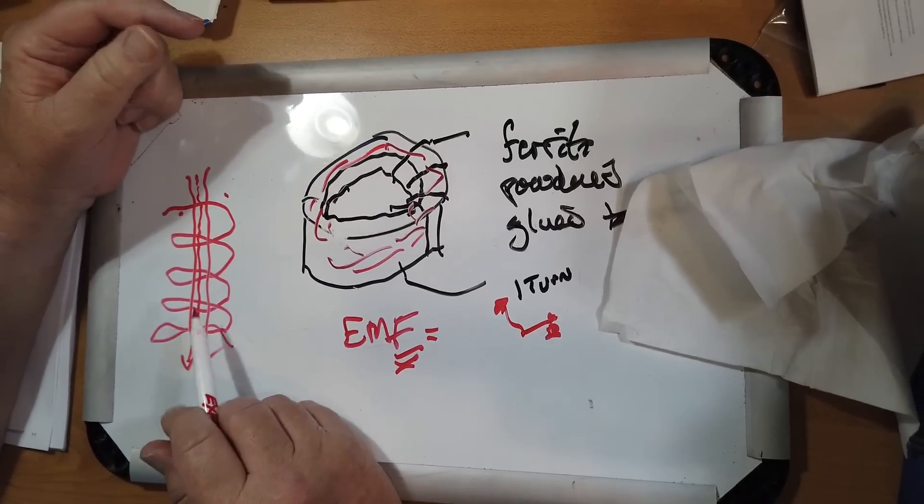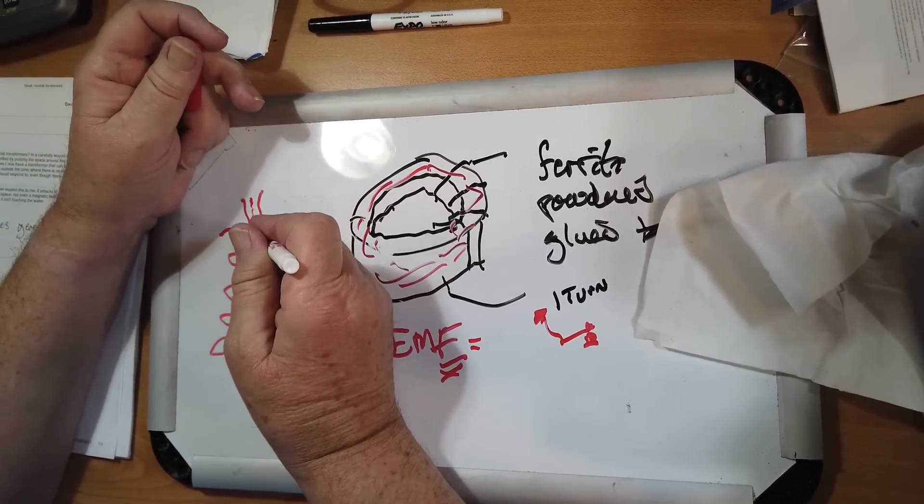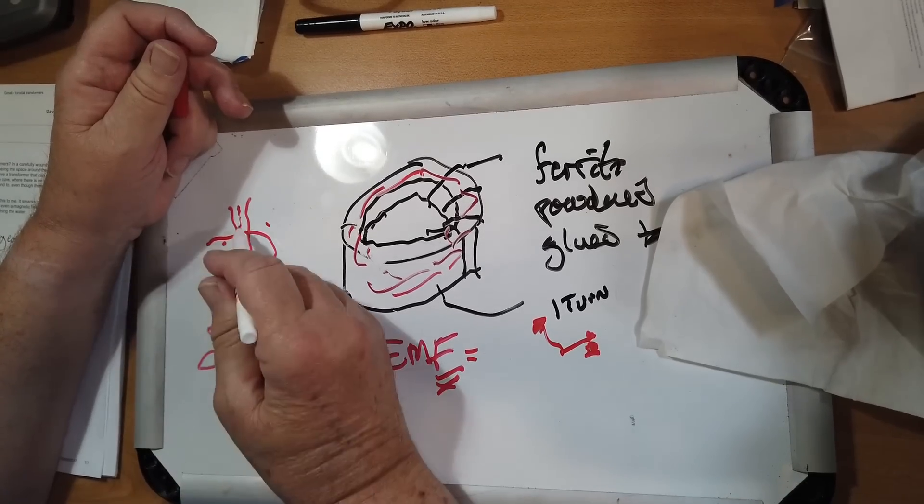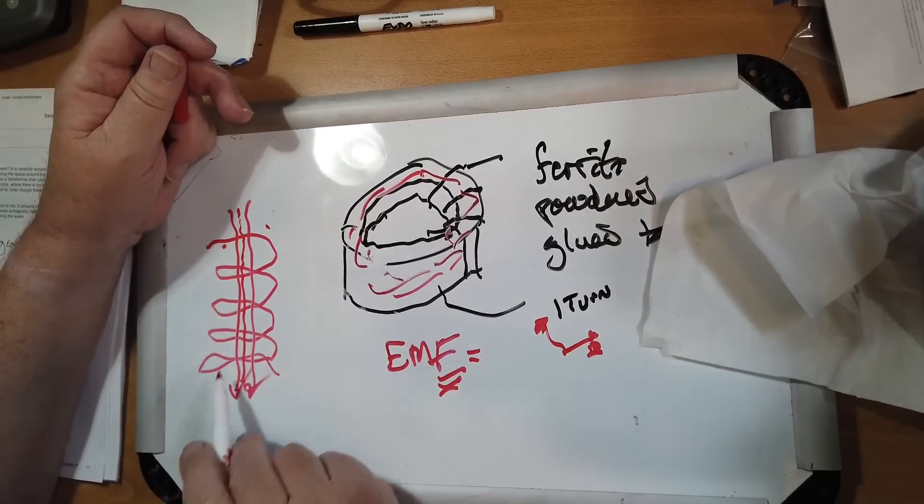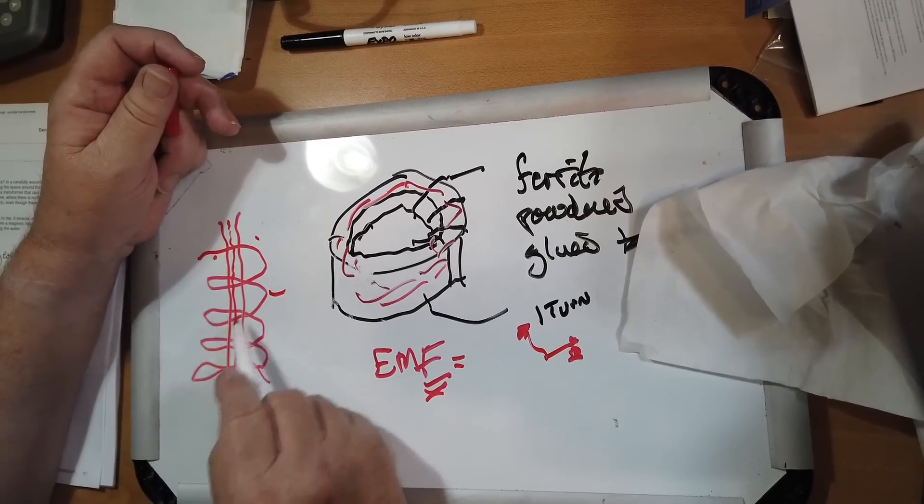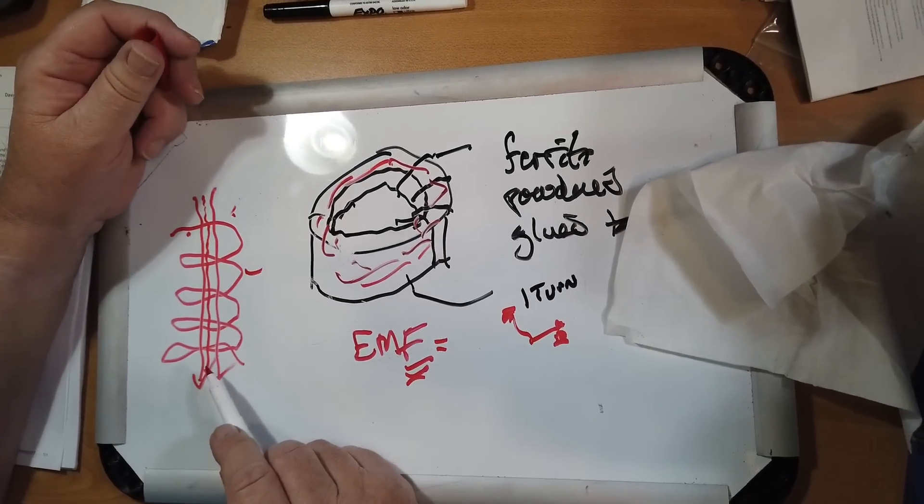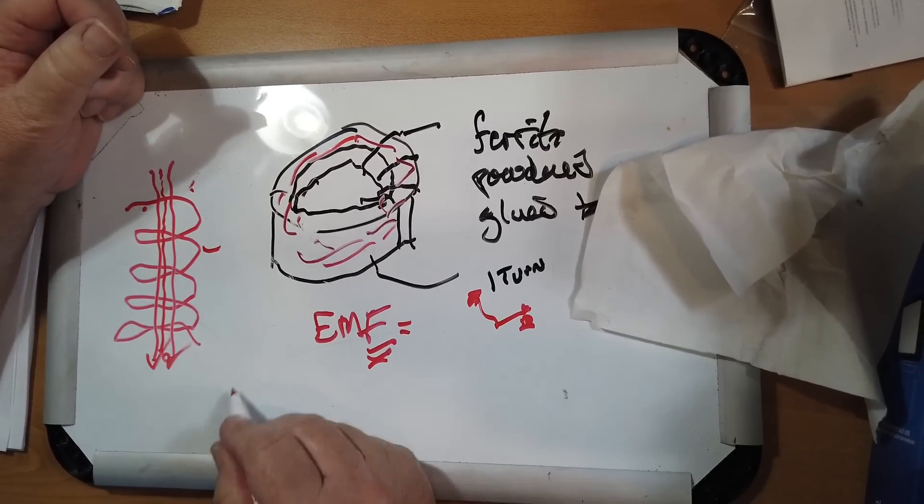So, if you look at Maxwell's equations and go through that, the fact that there are magnetic lines of force and the magnetic field is changing, this is very important, the magnetic field is changing. It will induce a voltage in any inductor wrapped around it. It's because of the way Maxwell's equations are working.